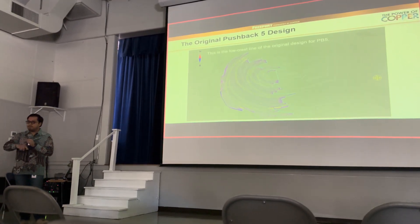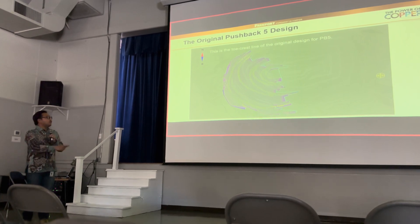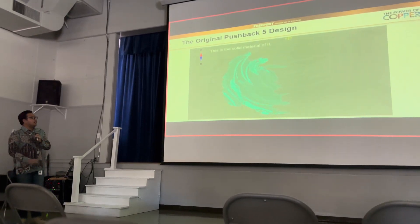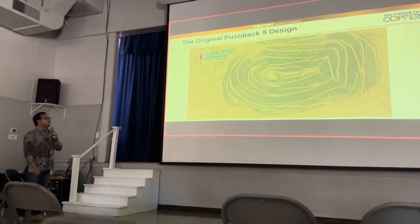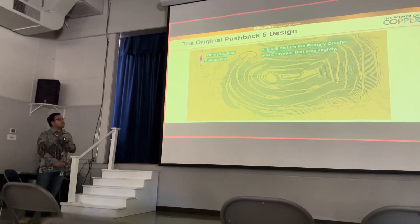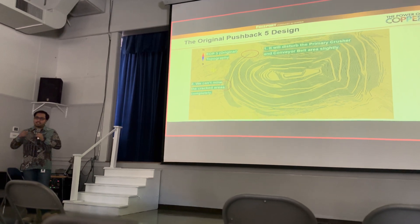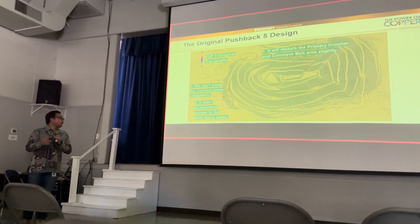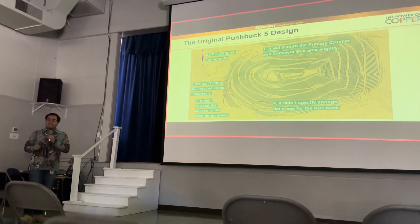Our friends in long-term planning already created a Pushback 5 design — we'll call it the original design. Looking from the top view, this shows the two crests, and from it we can generate a solid. However, there are several problems. First, it will disturb the primary pressure and compressor area slightly. Second, we cannot address the crack area completely. Third, it didn't re-establish access to our three lower areas, which is really important to our operation. Fourth, it didn't specify enough flat area for the fuel bays.